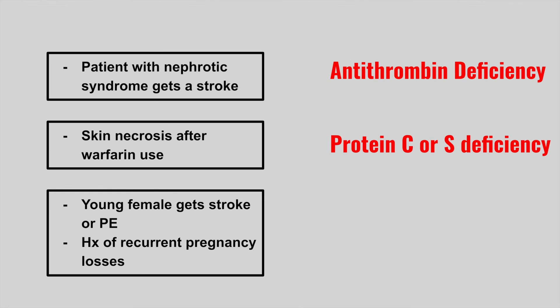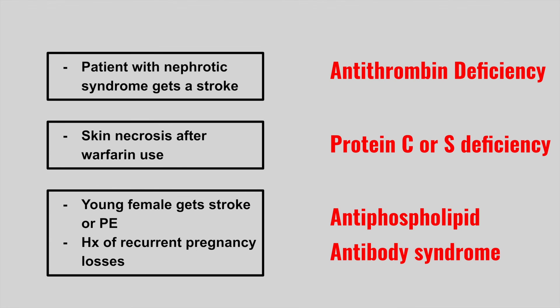Next, we have a young female who gets a stroke or pulmonary embolism and has a history of recurrent pregnancy losses. This is antiphospholipid antibody syndrome.